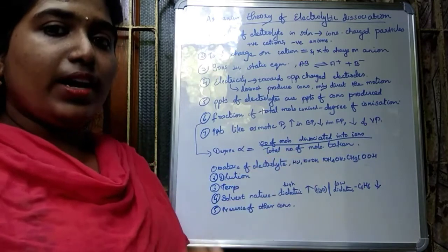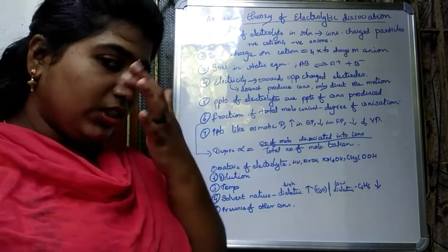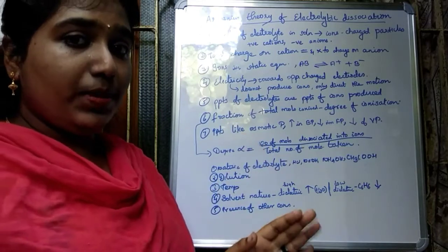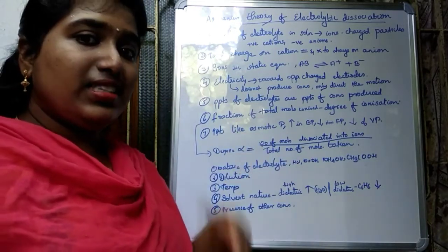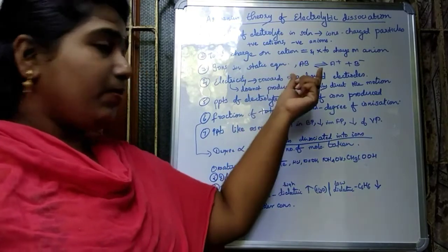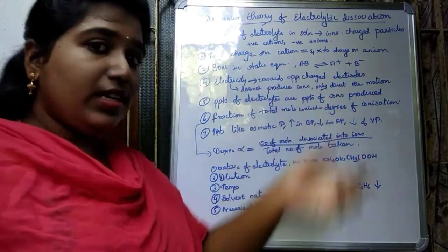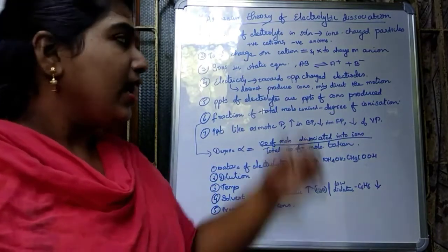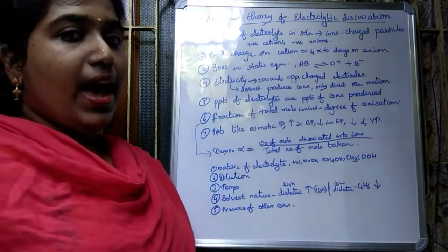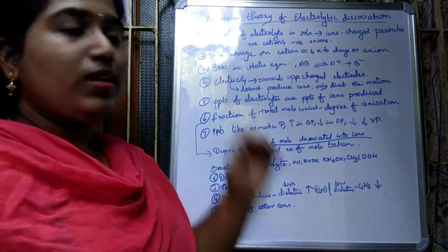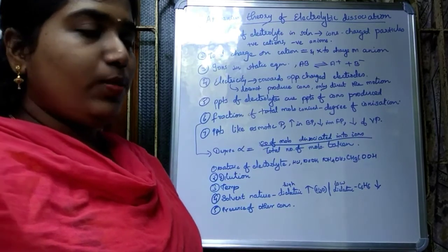The third point: the ions produced in a solution always exist in equilibrium with the undissociated molecule, and we see this as a static equilibrium. If AB is the electrolyte, it gets dissociated into A+ and B−, and there exists equilibrium shown by a double arrow. So there is a static equilibrium in this dissociation process.